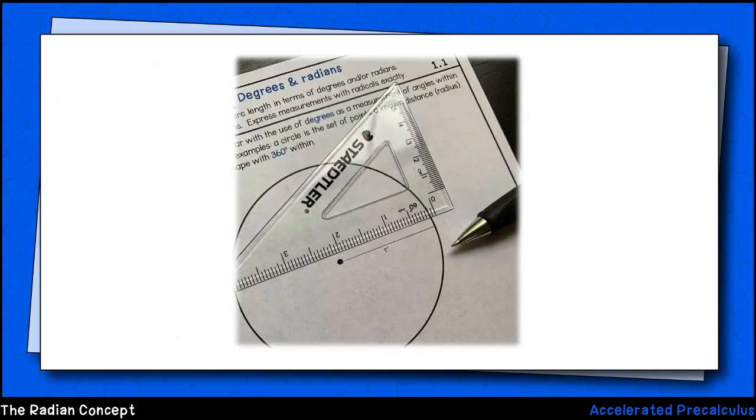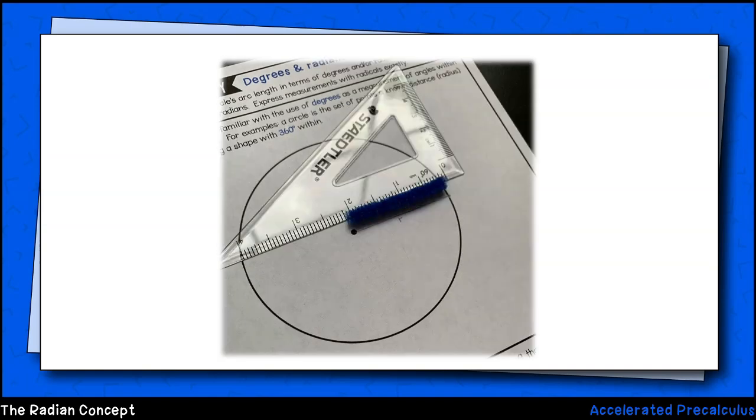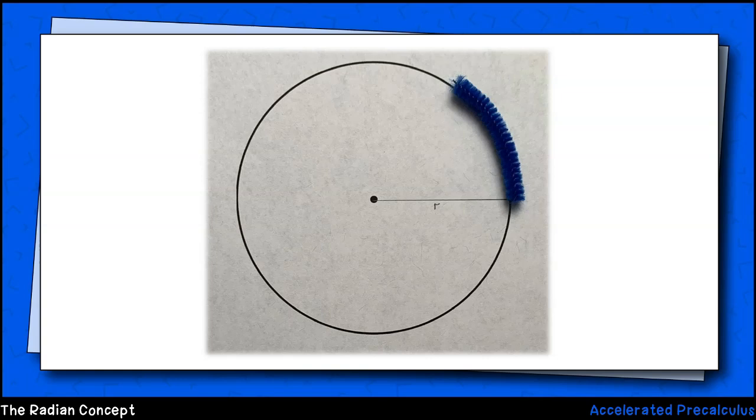In this demonstration, I'm going to start by using a straight edge to measure a radius from the center of my circle to a point on the circle. Next, I'm going to trim my blue pipe cleaner to match the radius of my circle. I'll keep the radius length and I'll set the rest aside.